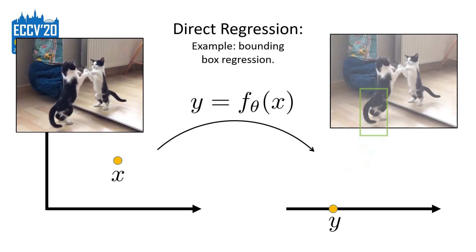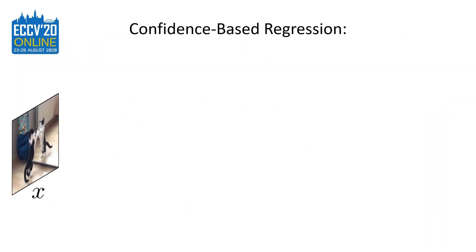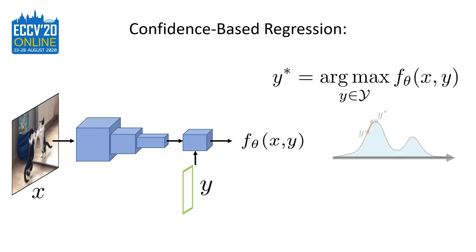However, this approach cannot capture multiple hypotheses or ambiguities. This issue is addressed by confidence-based regression, which includes a scalar confidence value f for each x-y pair and maximizes f with respect to y to get the final prediction.